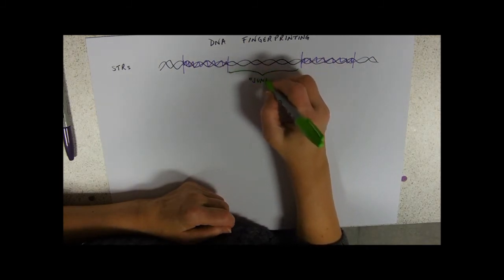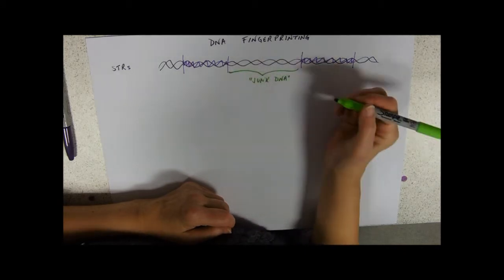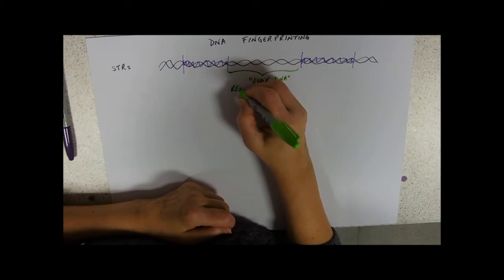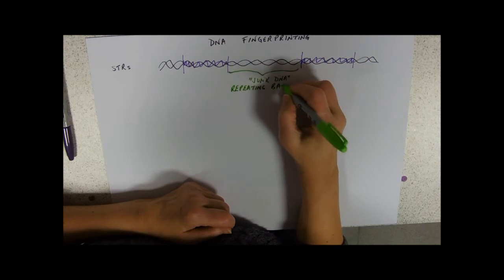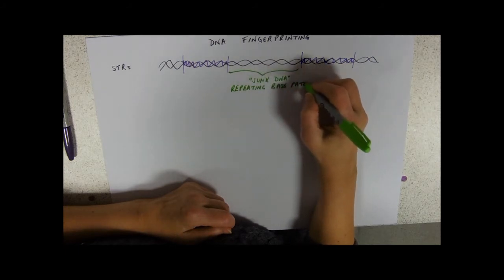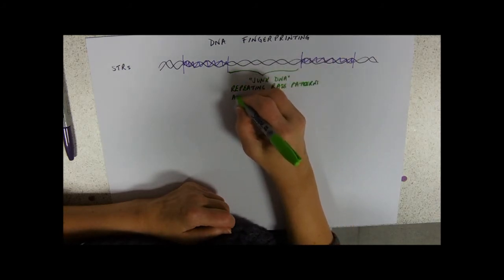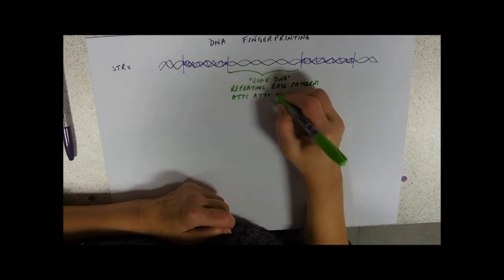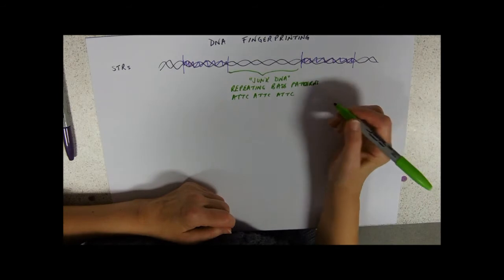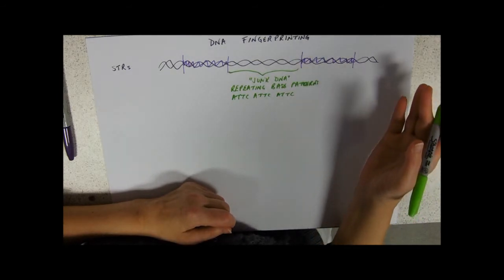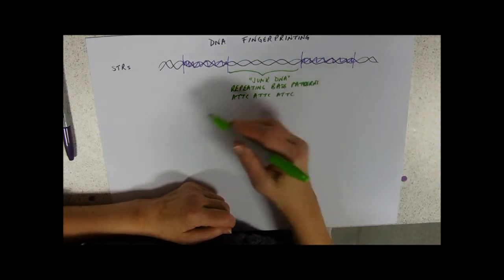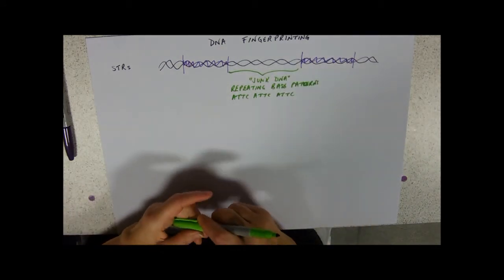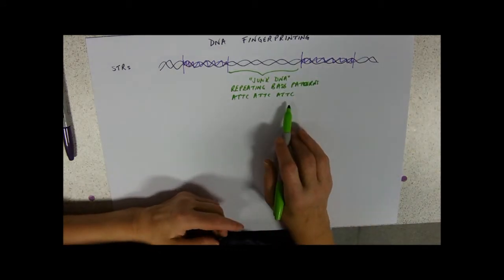In between the genes we have these areas of sort of junk DNA, and these are repeating base patterns. So say you had one that went ATTC, it would go ATTC, ATTC, and you might have three of those or you might have 20 of them.